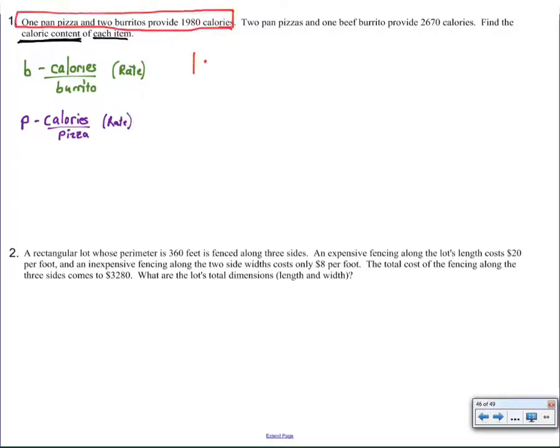Given information was, if we take one pizza times the number of calories in a pizza, and we take two burritos times the number of calories in a burrito, that's going to add up to a total of 1,980 calories. Once again, pizza was constant, it's fixed. P calories was unknown, variable.